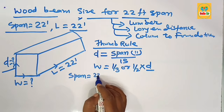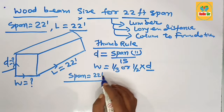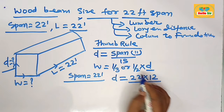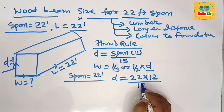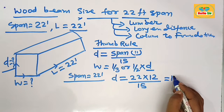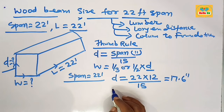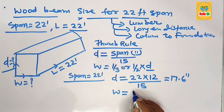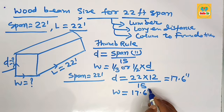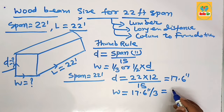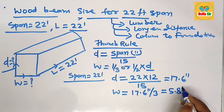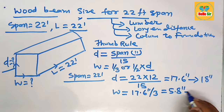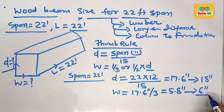With a span length of 22 feet, the depth section of the beam is calculated as: 22 × 12 divided by 15, which equals 17.6 inches. The width section of the wood beam required to span 22 feet is the depth divided by 3, which equals approximately 5.8 inches.